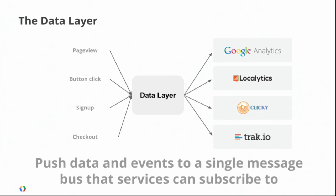The idea of the data layer is to abstract that away — just publish everything that happens on the page that you're interested in to a common message bus, and then all these different services can subscribe to that. So as a developer, your concern moves away from how to interact with all these different tracking libraries, and toward just making sure you're exposing the interesting things happening on your page.